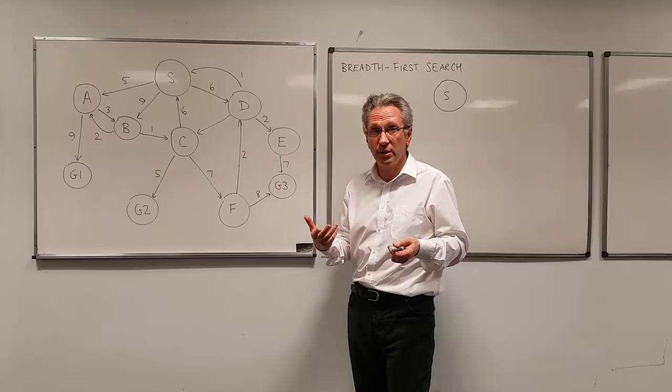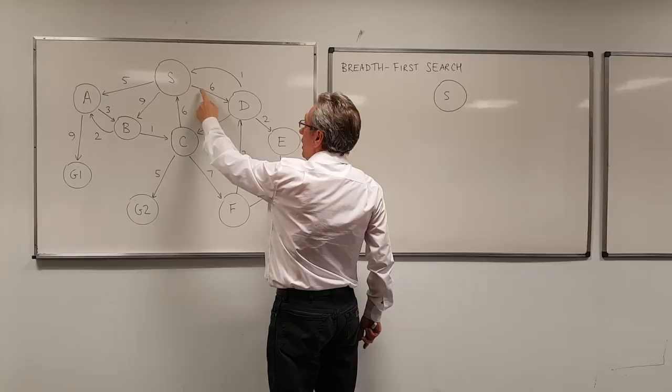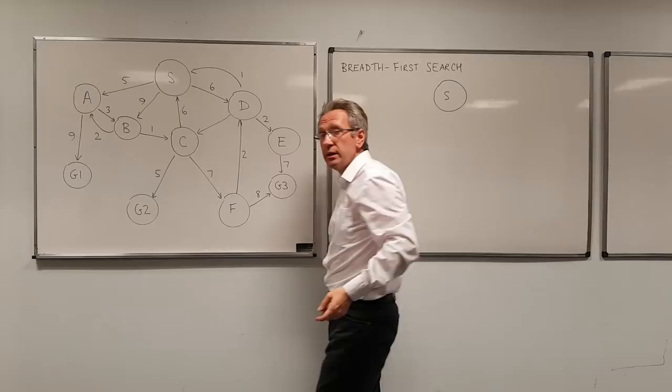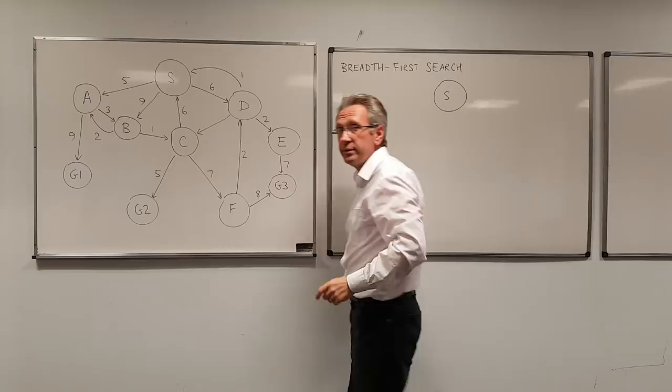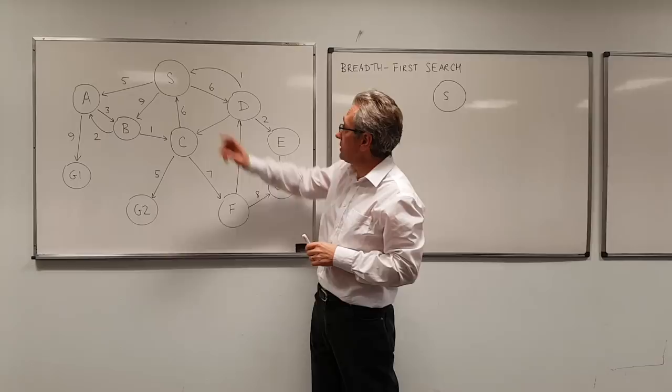So what the agent is trying to do is it's trying to move through the search space to get into one of the goal states. And the way that it does that is by executing actions, and the actions are represented as directed arcs within the graph. So for example, if it's in the initial state S and it decides to execute this action, then it will enter state D. In doing that, it will have a cost associated with the action, and the cost associated with this particular action is six units.